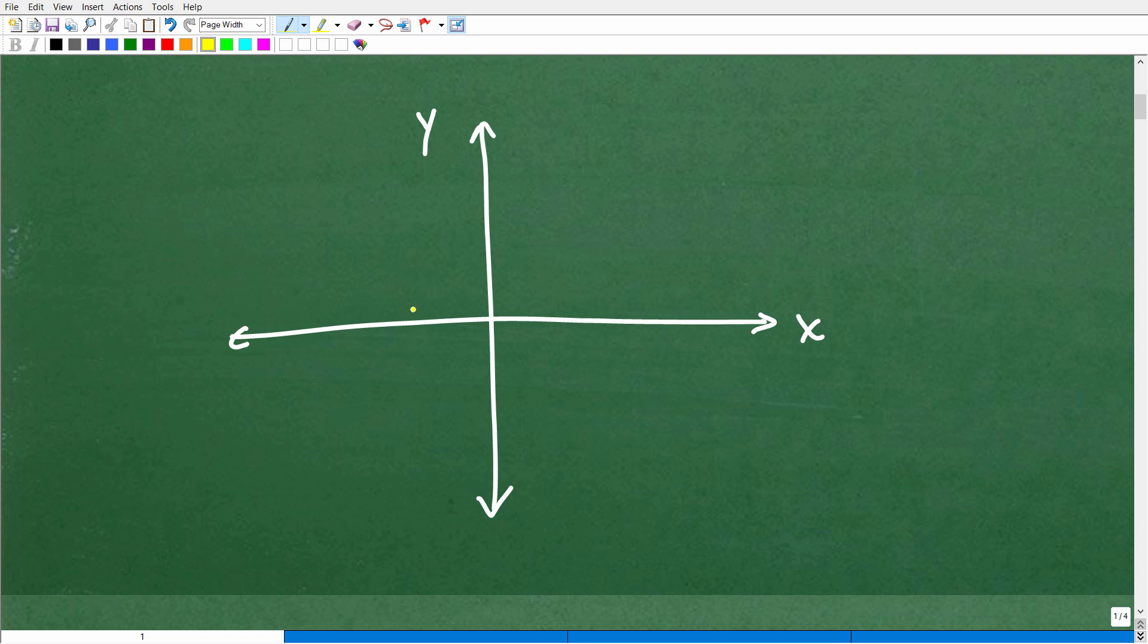Now, if I graph two lines on an XY plane, what are the different scenarios that can occur? Well, I could graph one line, then I could graph another line like this. And typically, if you graph two lines and they cross, right there, that is the what? Well, that is the solution to the system. This point, this precise XY point is a solution to the system.